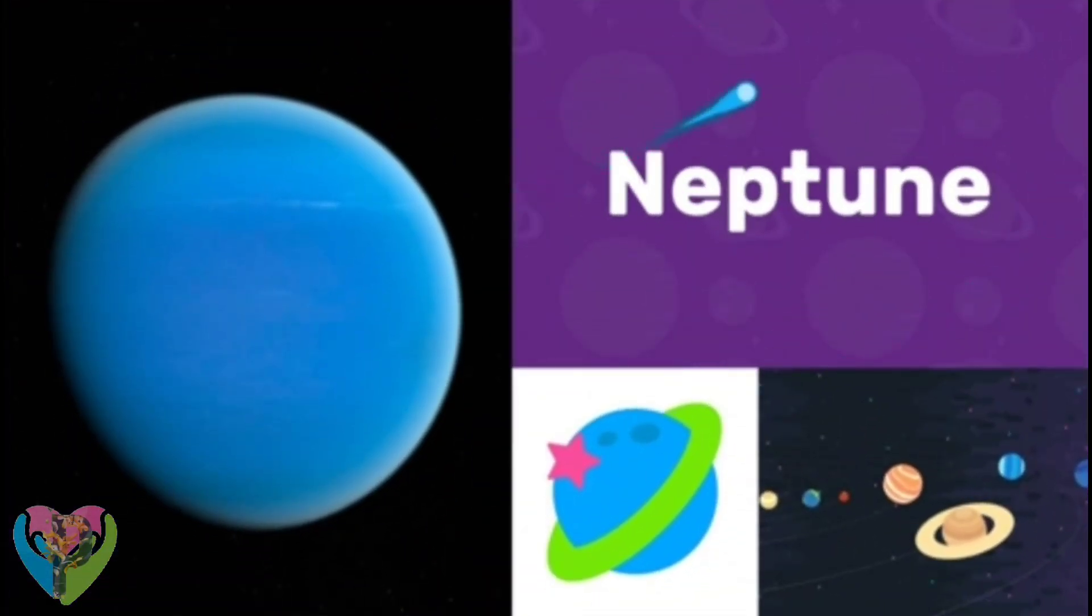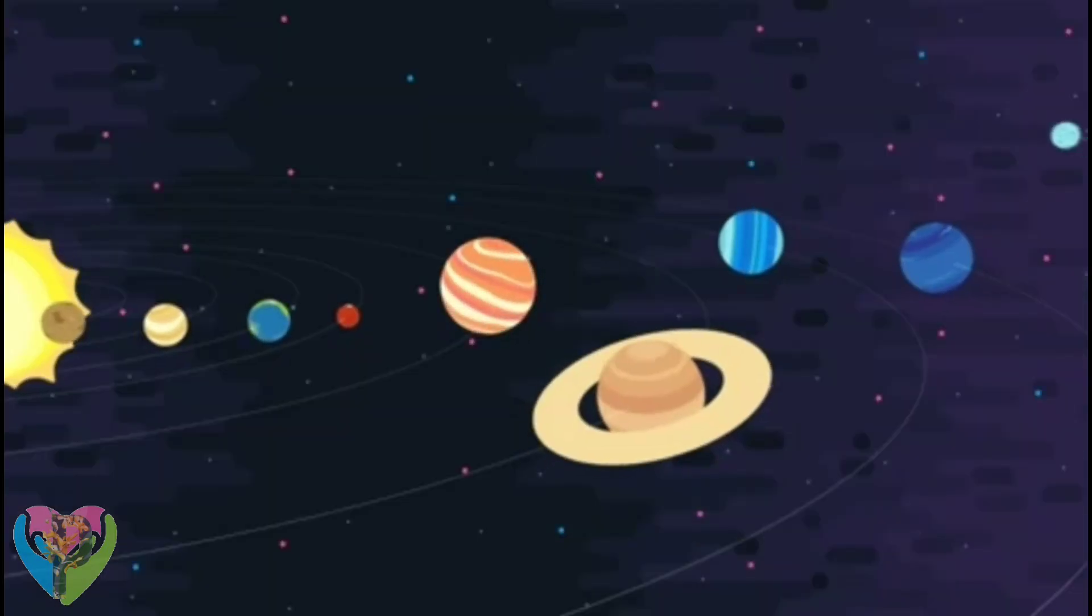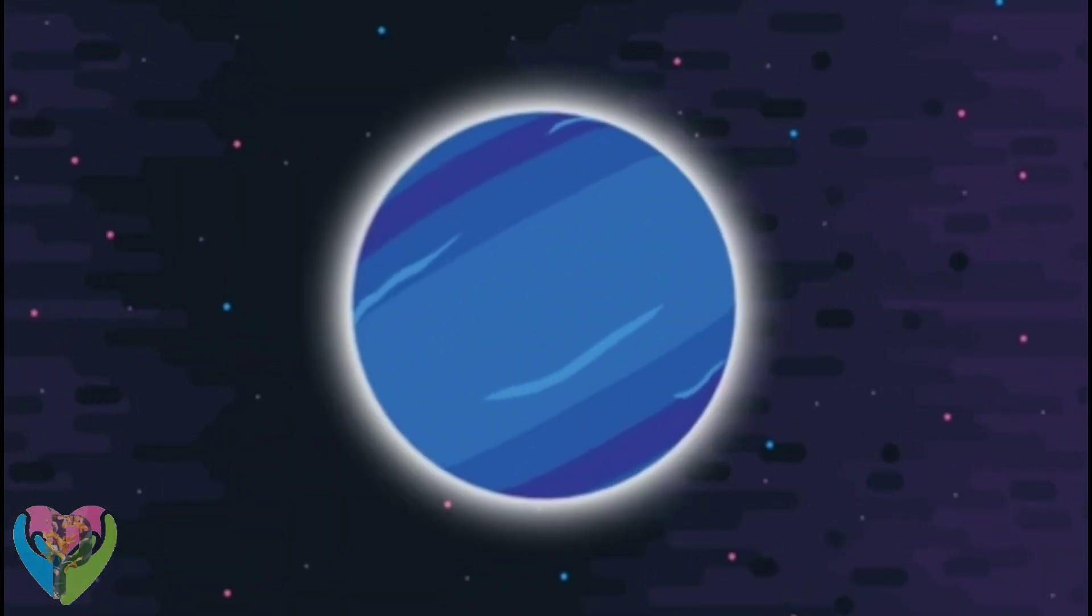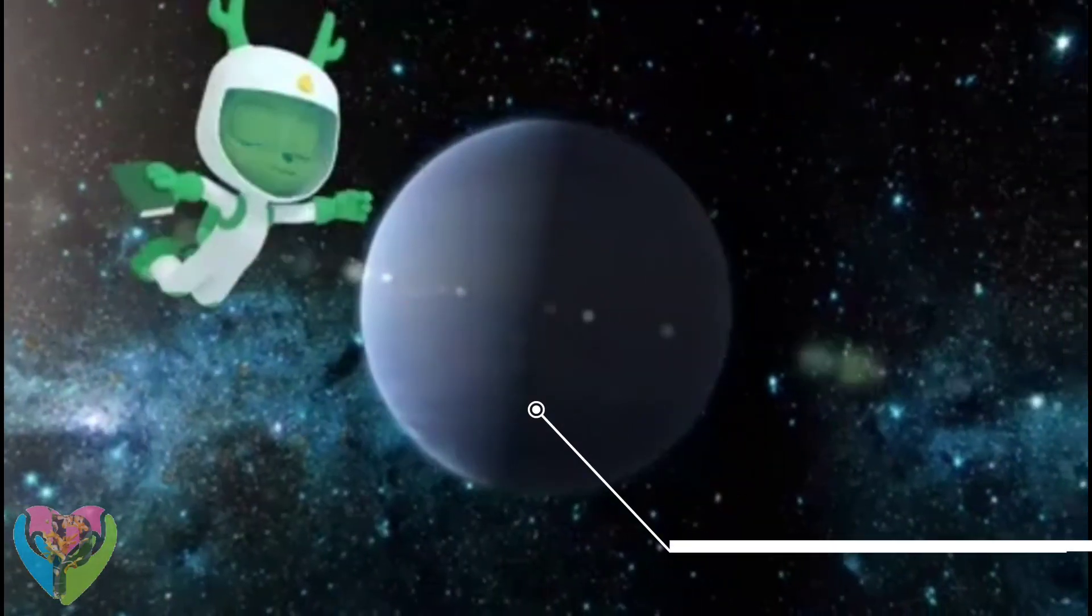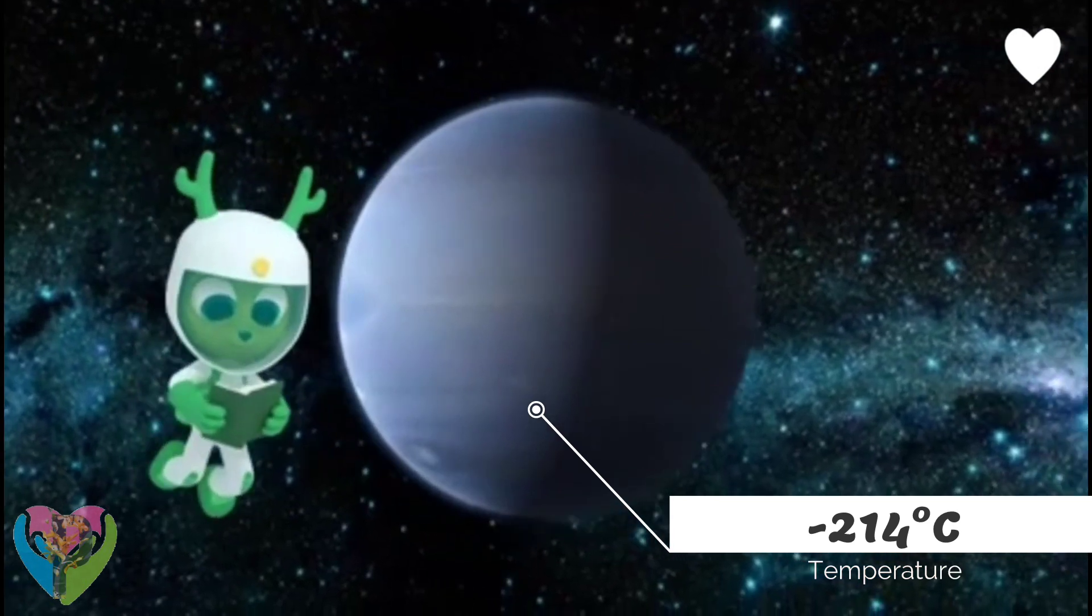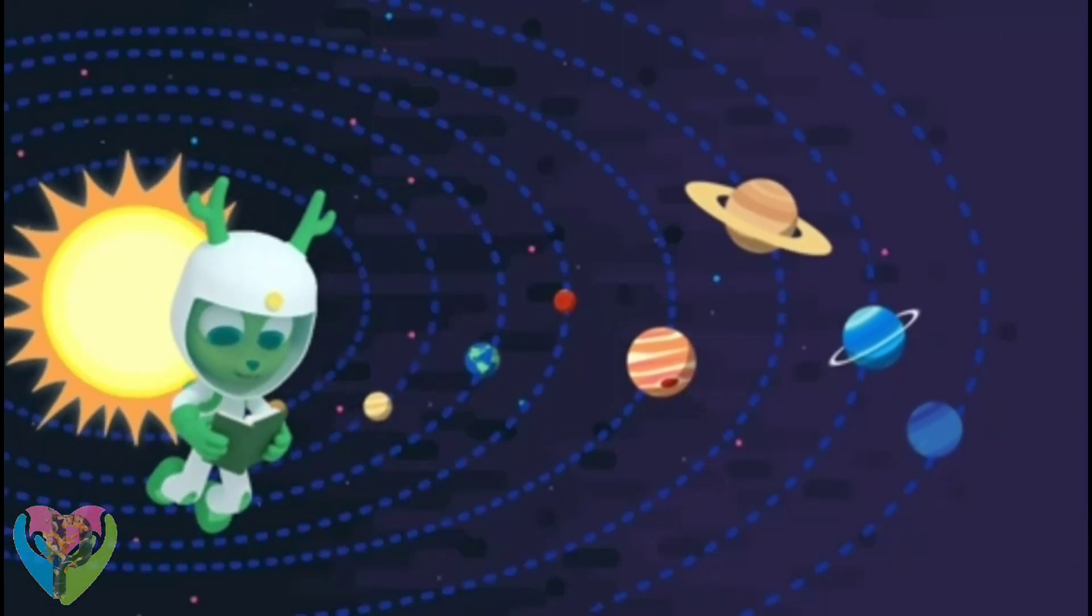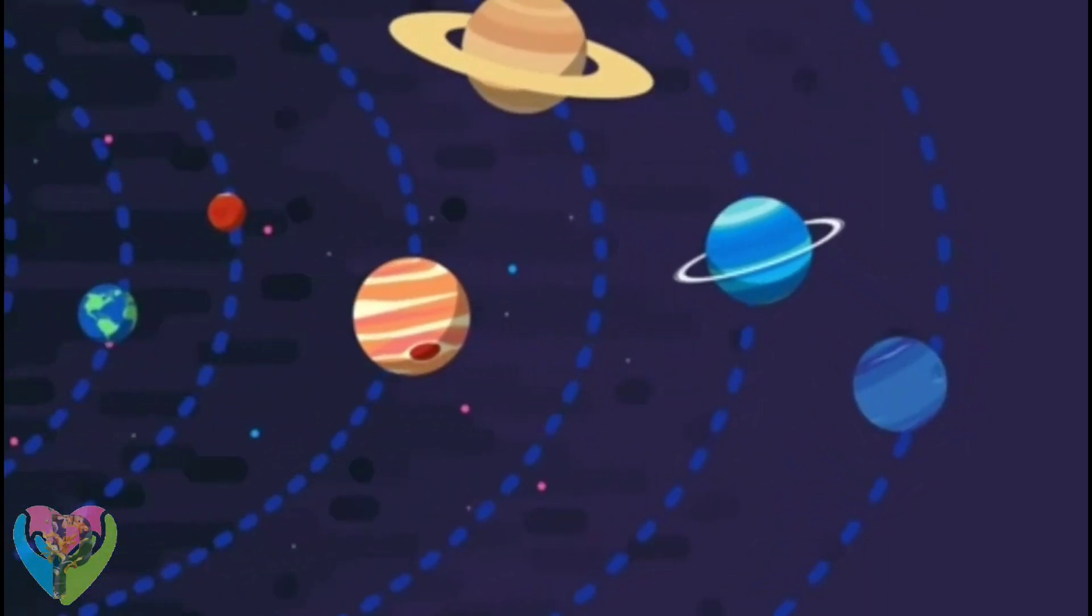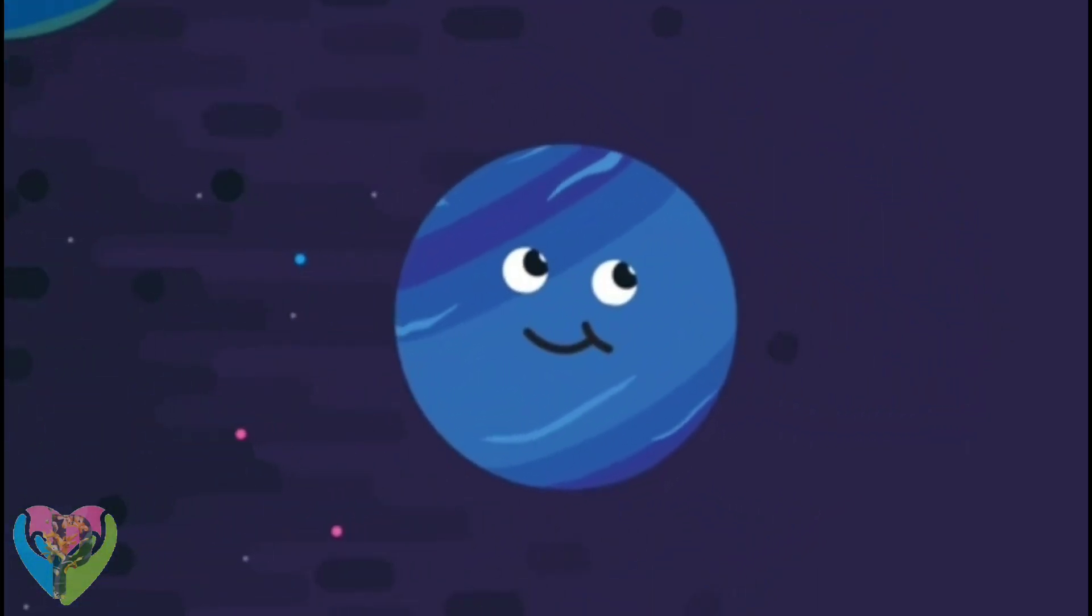Neptune! Neptune is the eighth planet from the Sun in our solar system. That's the planet Neptune! I'm reading about it in my book. Neptune is the furthest planet from the Sun in our solar system. It's so far that it took scientists some time to spot it.